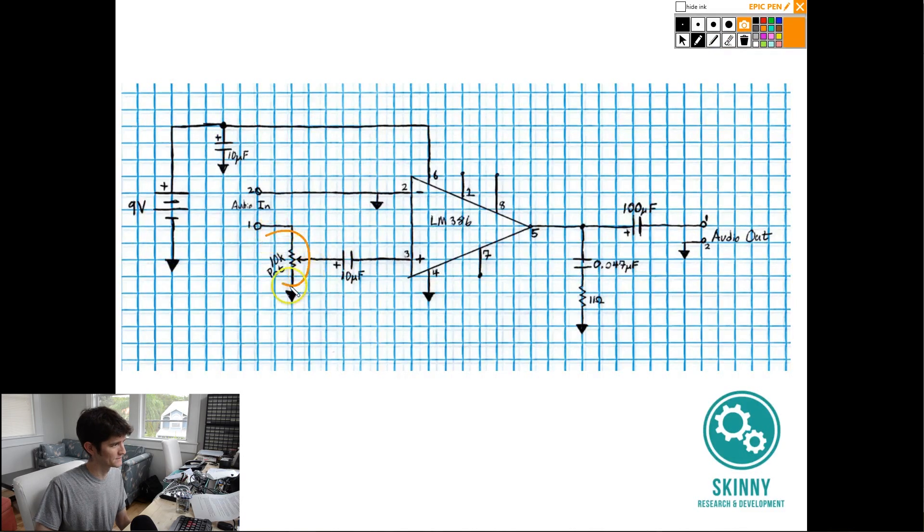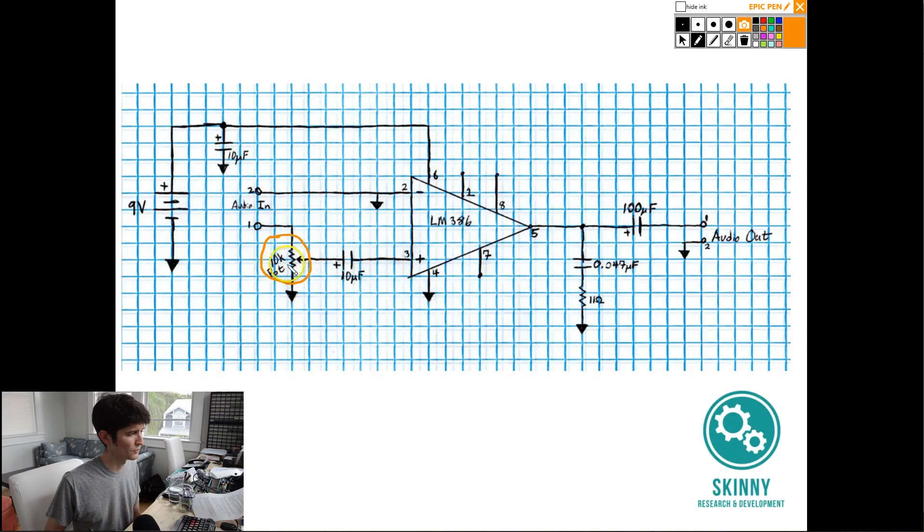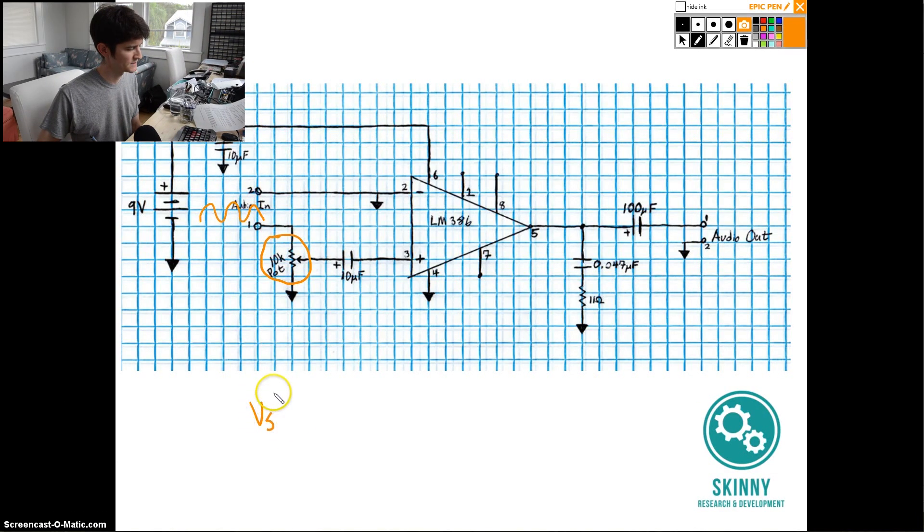The second thing I want to look at is down here, this potentiometer. You'll see that the audio that we have coming into our headphone amplifier comes from here, and this audio is going to come in and then feed into this LM386. This potentiometer is being used as a volume control. What happens is audio is coming in here. This audio is a voltage, we're going to say this voltage is Vs, and this audio comes in to the potentiometer, and the potentiometer is nothing more than a voltage divider.